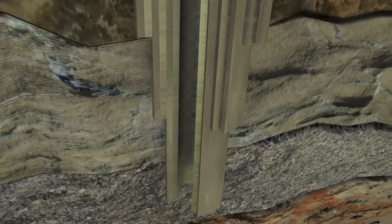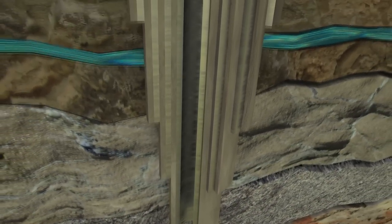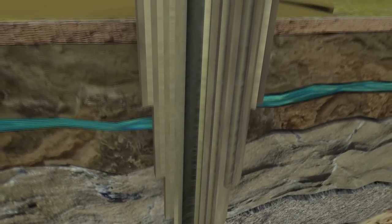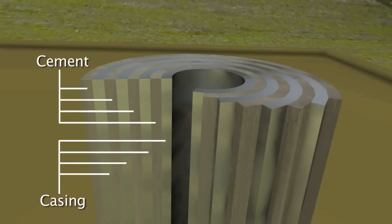Ohio is one of the first states to mandate cemented intermediate casing in every horizontal shale gas well. This means that every shale well in Ohio will have a minimum of four cemented casing strings.